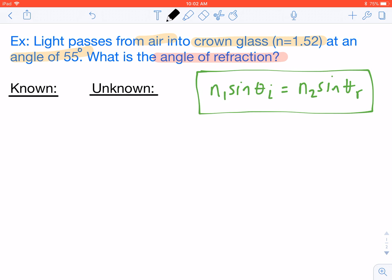So as we start listing our knowns and our unknowns, we know air is our first substance, and air always has an index of refraction of 1.0. Crown glass is our second substance, so n2 is equal to 1.52, and we know that our angle of incidence is 55 degrees. Our unknown value in what we're solving for in this case is our angle of refraction, so we don't know theta r.